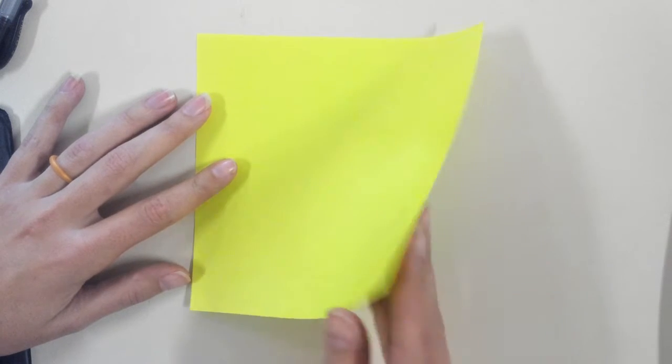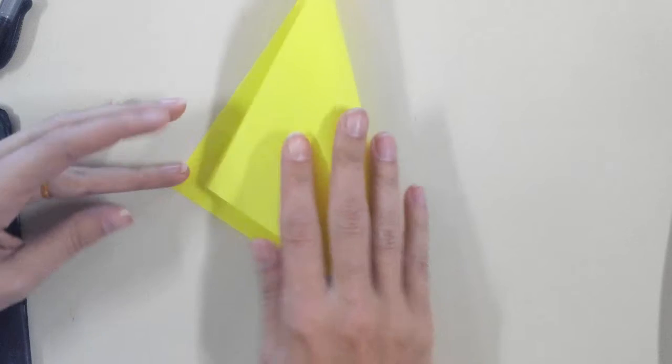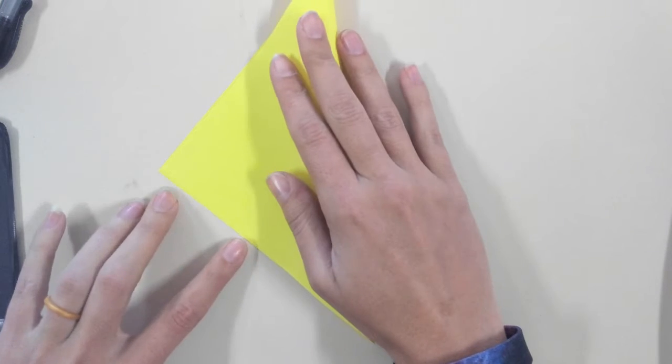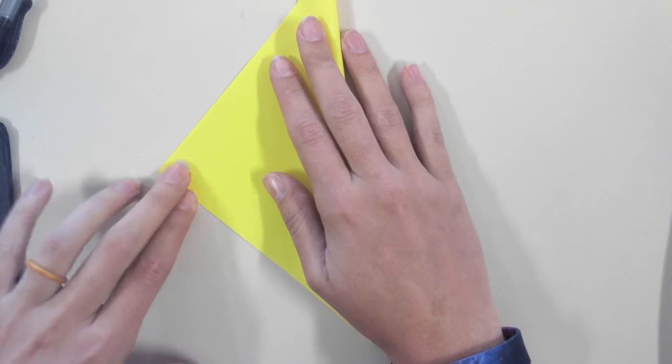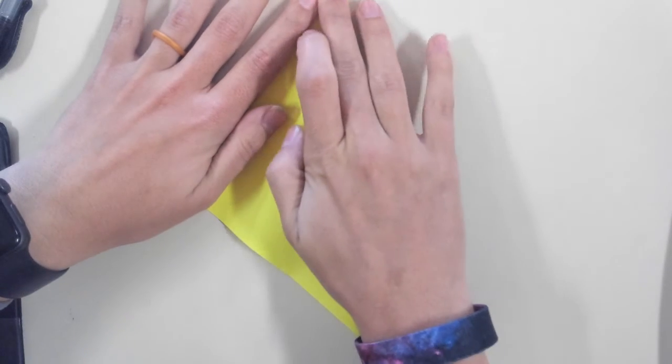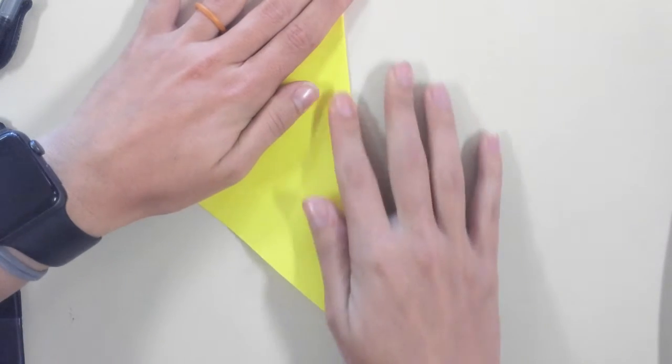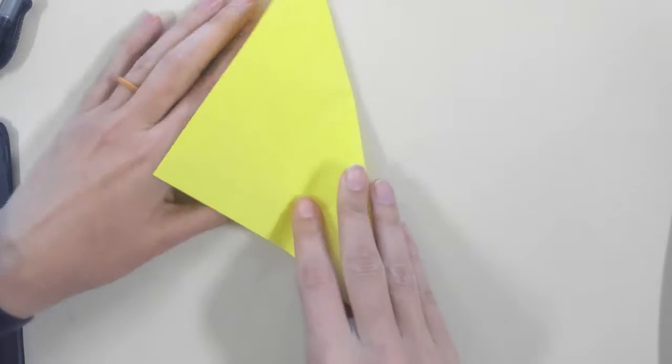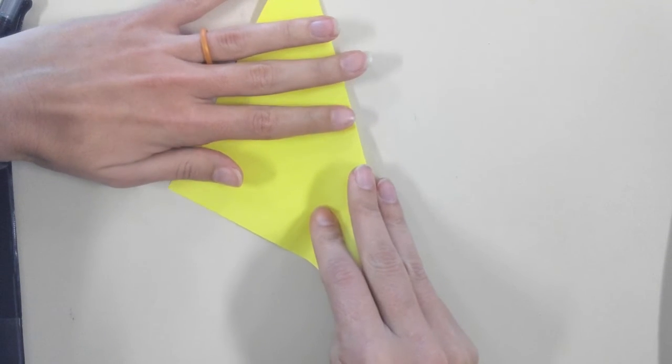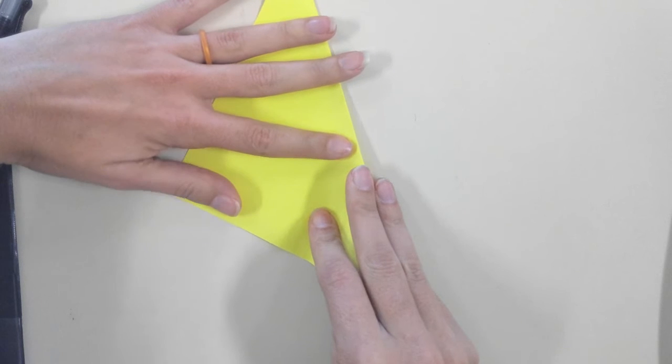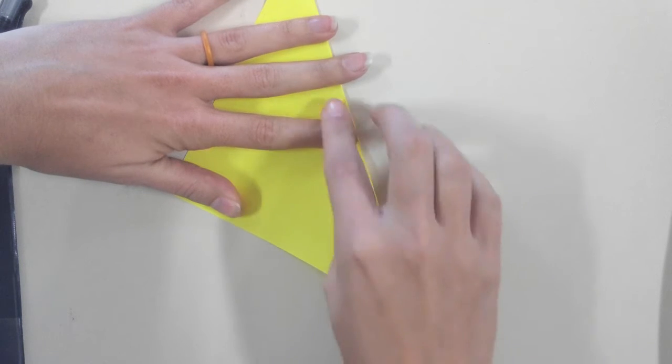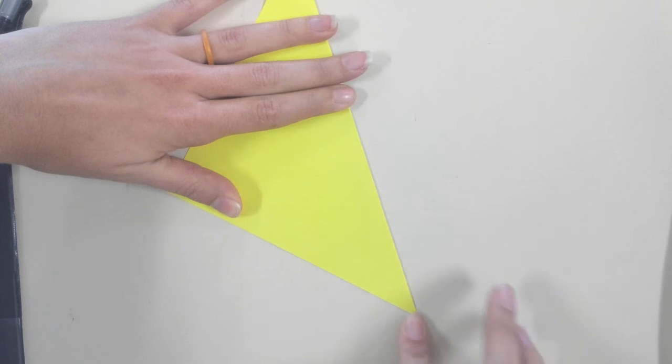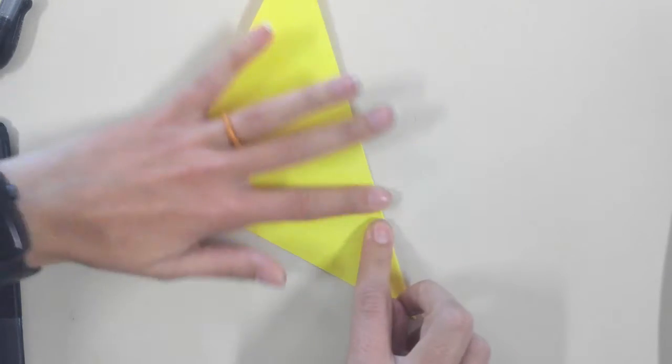So step one is going to be folding it in half. And you want your folds to be really crisp and right on that corner. I messed up there, so I'm going to adjust it again. We want it really, really crisp. There we go. That's better.